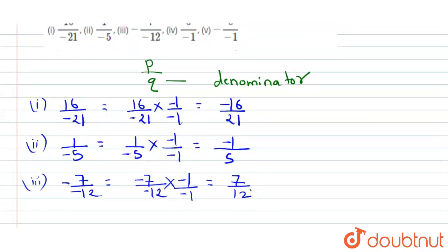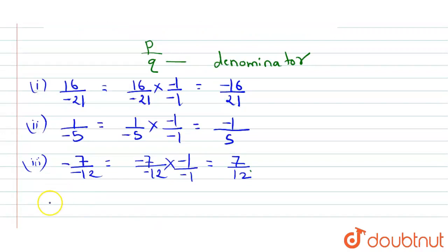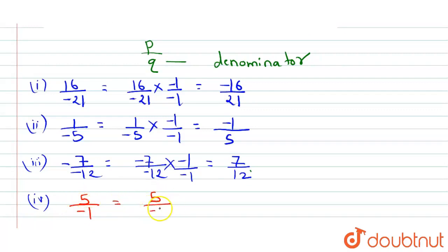The 4th number given to us is 5 upon minus 1. We can write it as 5 upon minus 1 multiplied by minus 1 upon minus 1, and we get minus 5 upon 1. Here again, the denominator is converted into a positive digit.